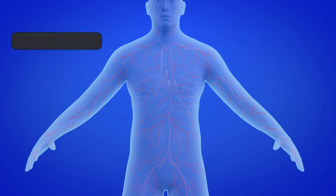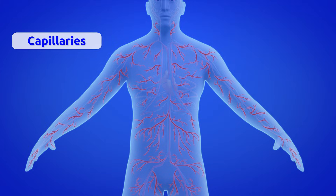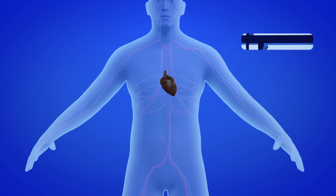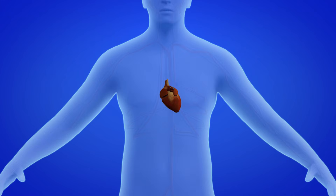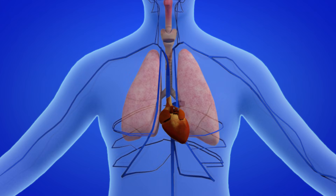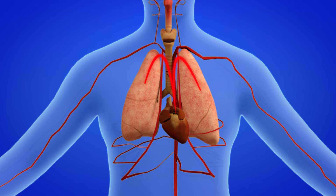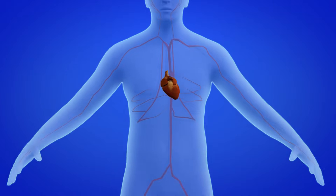The circulatory system uses arteries, capillaries, and the heart, which is the main organ. The heart pumps blood without oxygen and waste through the arteries to the lungs, where it expels waste and collects the oxygen and nutrients needed by cells.